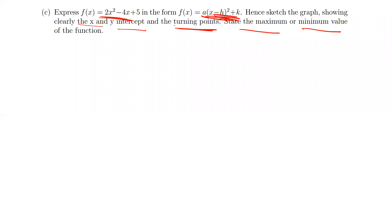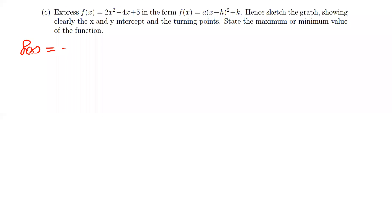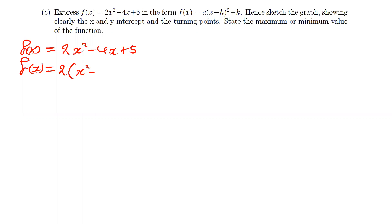I'll apply the completing the square method step by step. We have f(x) = 2x² − 4x + 5. The first thing we do is factor out 2 from the first two terms. So f(x) = 2(x² − 2x) + 5.